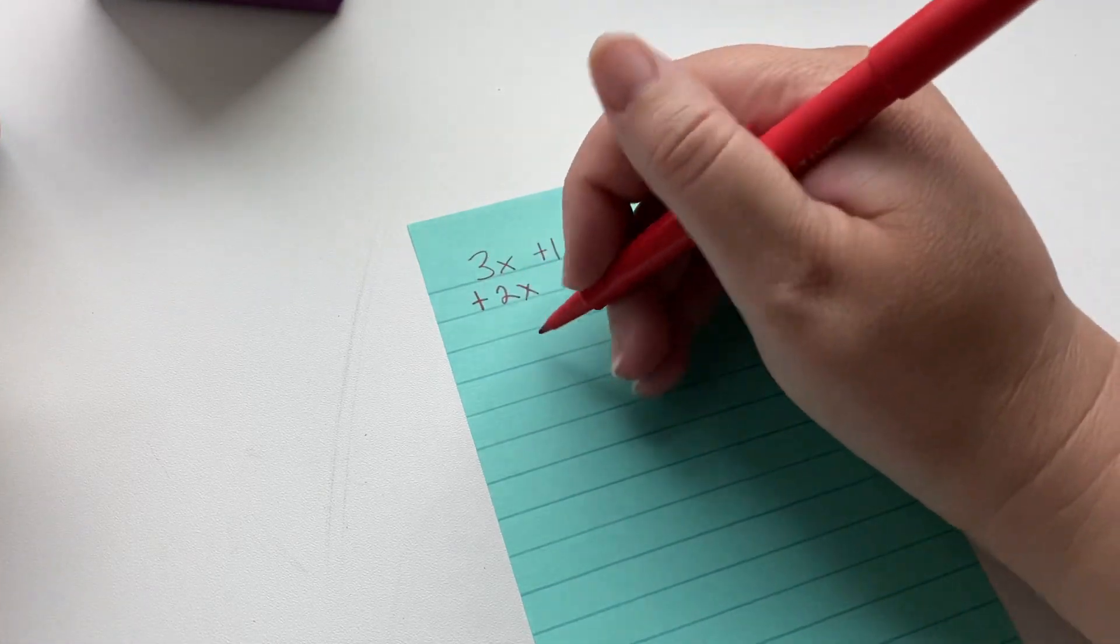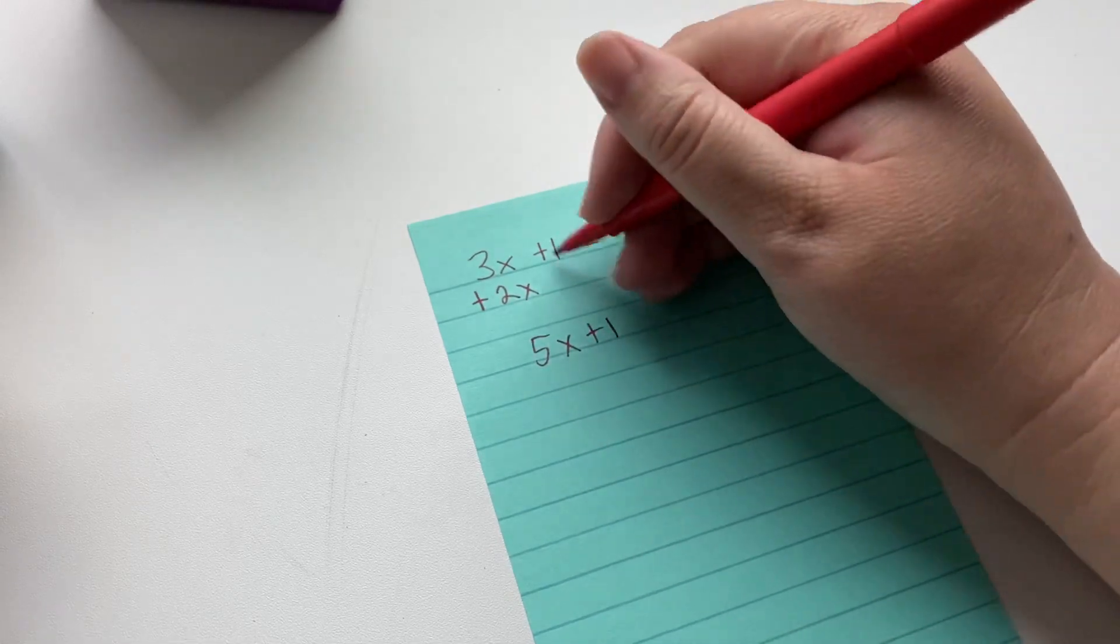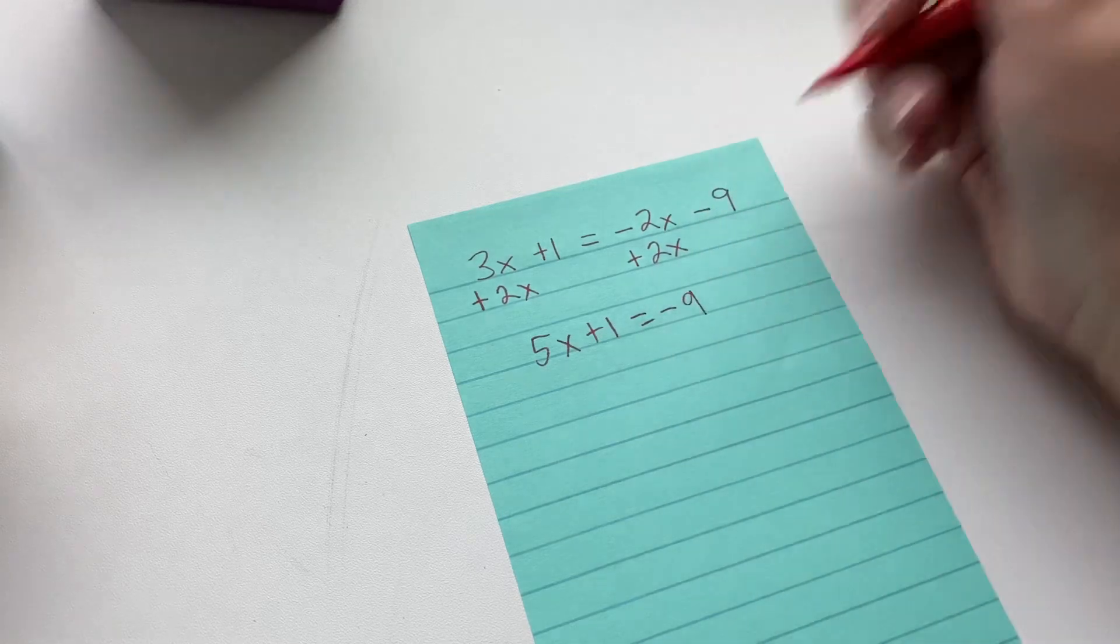So 3 plus 2x is going to be 5x plus 1, just bringing that down, and that's zero, and then we have negative 9.